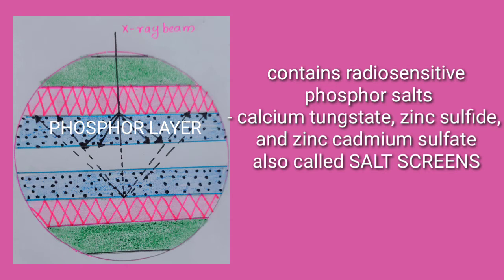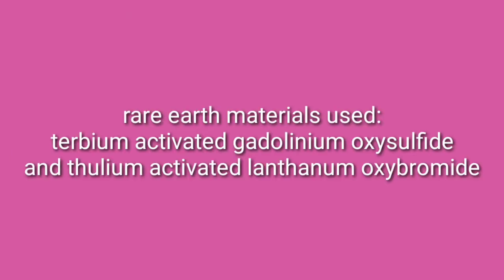The phosphor layer contains various radio-sensitive salts, including inorganic salts like calcium tungstate, zinc sulfide, and zinc cadmium sulfate. Due to the presence of these salts, the intensifying screens are also referred to as salt screens. These days, rare earth materials such as terbium-activated gadolinium oxysulfide and thulium-activated lanthanum oxybromide are also used.